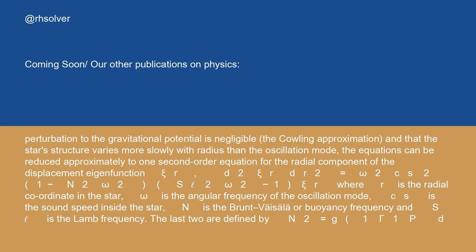The equation is: d²ψ/dr² = (ω²/c_s²)(1 − N²/ω²)(S_ℓ²/ω² − 1) ψ_r, where r is the radial coordinate in the star, ω is the angular frequency of the oscillation mode, c_s is the sound speed inside the star, N is the Brunt–Väisälä or buoyancy frequency, and S_ℓ is the Lamb frequency.